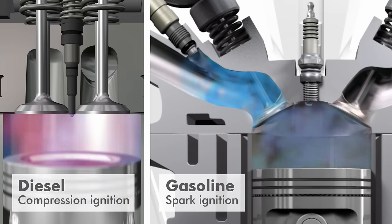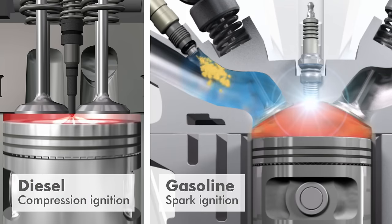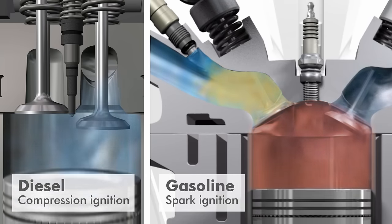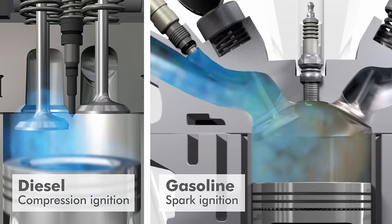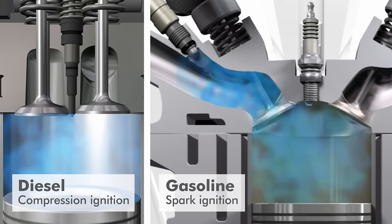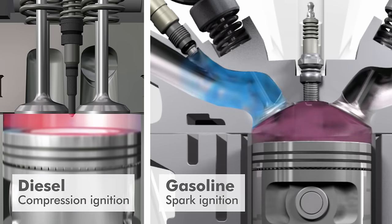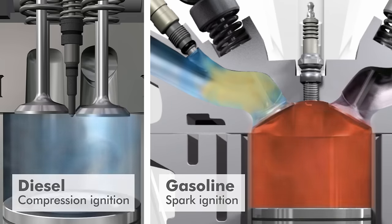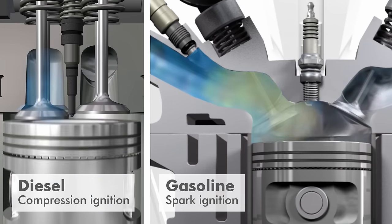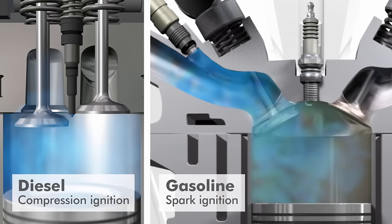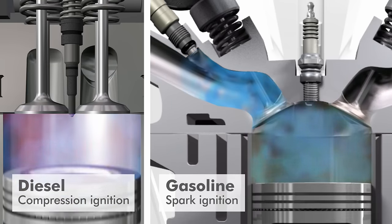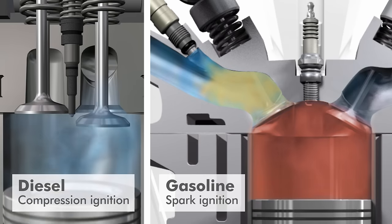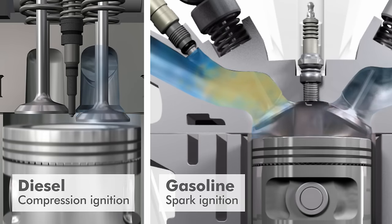In conventional gasoline engines, a mixture of fuel and air is drawn into the cylinder, compressed by the motion of the piston and ignited by a spark as the piston nears the top of the cylinder. The resulting combustion generates pressure which forces the piston down to power the vehicle.